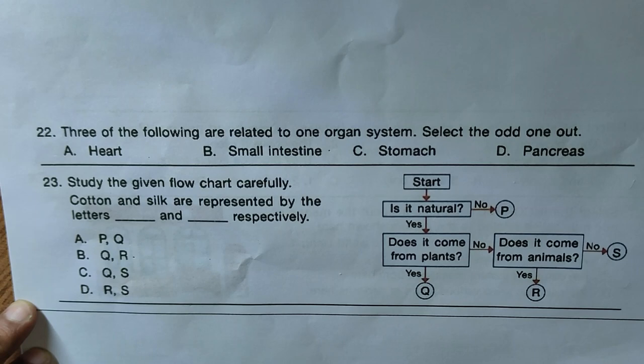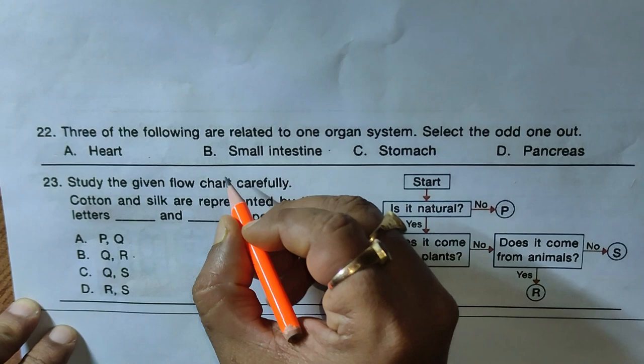Question twenty-two: three of the following are related to one organ system — select the odd one out. Options are A — heart; B — small intestine; C — stomach; D — trachea. The correct answer is B, the small intestine.